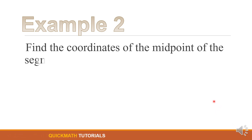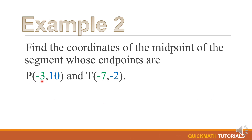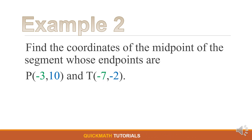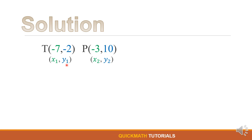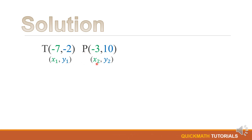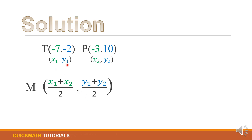Example number 2. Find the coordinates of the midpoint of the segment whose endpoints are point B, we have negative 3 and 10, and point T, we have negative 7 and negative 2. For our solution, this time we will let T be our first point so we have x sub 1, y sub 1, and point P be our second point, we have x sub 2 and y sub 2. Now, using the midpoint formula, we will substitute the values of x sub 1, y sub 1, x sub 2, and y sub 2.